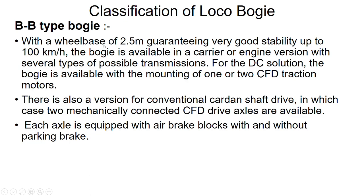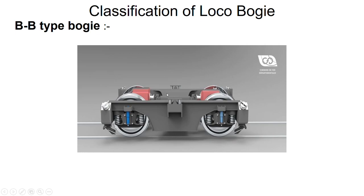With a wheel base of 2.5 meters, guaranteeing very good stability up to 100 km per hour. The bogie is available in carrier or engine version with several types of possible transmissions. This is the BB type bogie — the mechanical coupling, the primary suspension spring, and the secondary suspension are visible. The motor is mounted in between, so a single motor drives the two axles and hence the four wheels.